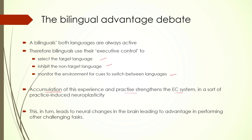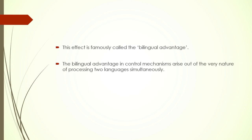A bilingual, simply by virtue of speaking two languages flawlessly, is constantly doing all these activities even without being aware of it. This kind of constant practice strengthens the executive control system, which in turn leads to neural changes in the brain, leading to advantage in performing other challenging tasks. We are trying to see if bilingualism is at par with variables like music or exercise in terms of cognitive effects. This effect is called bilingual advantage.